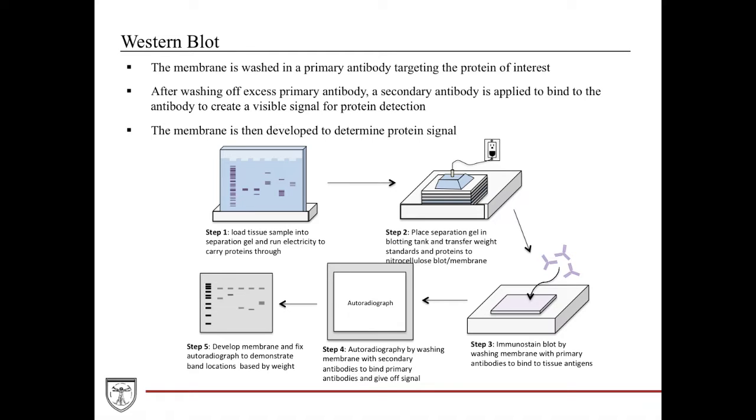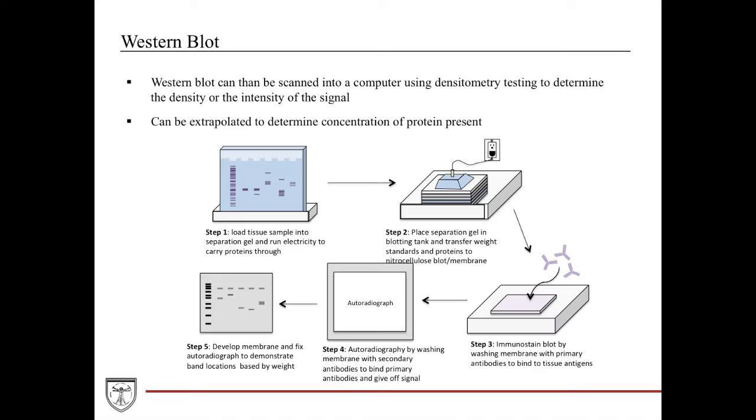What's interesting about the Western blot is that it's a very subjective test, like yes or no presence at this molecular weight. But you can use densitometrics or densitometry to actually determine what the intensity can extrapolate to the concentration. You can make this more objective by scanning this new developed film of your nitrocellulose membrane into a computer. And using specific software, you can determine the density of the signal or the intensity of the signal and create a concentration from it. That's probably a little more advanced. Usually it's just determined yes or no. Is this protein present or not?